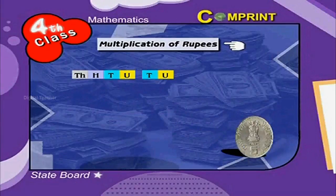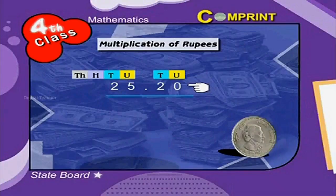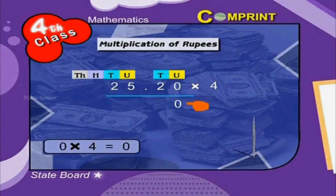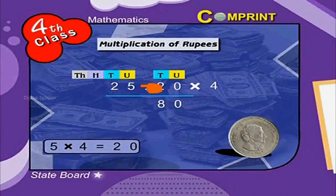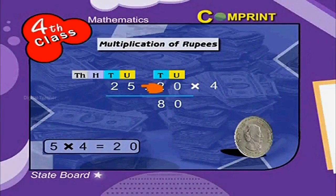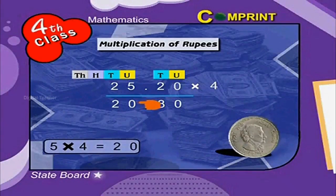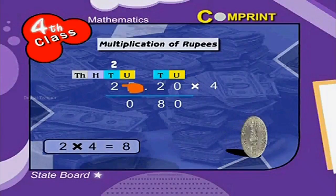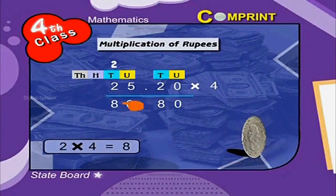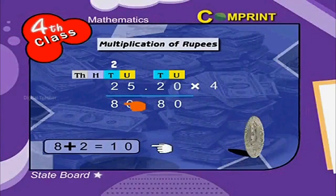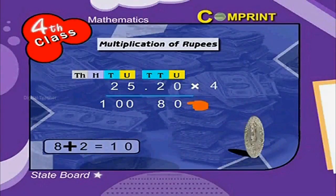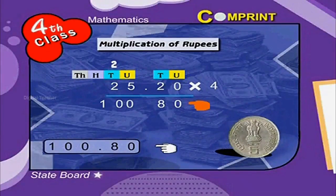Now let us multiply the money. Here is an example: Rupees 25, 20 paisae multiplied by 4. Multiply the units digit with 4 first: 0 into 4 is equal to 0. Multiply the tens digit: 2 into 4 is equal to 8. Then multiply the units place of rupees: 5 into 4 is equal to 20. Write 0 in the units place and carry 2 to the tens place. Multiply the tens place: 2 into 4 is equal to 8, plus 2 carried equals 10. Since 100 paisae make a rupee, the answer is 100 rupees 80 paisae.